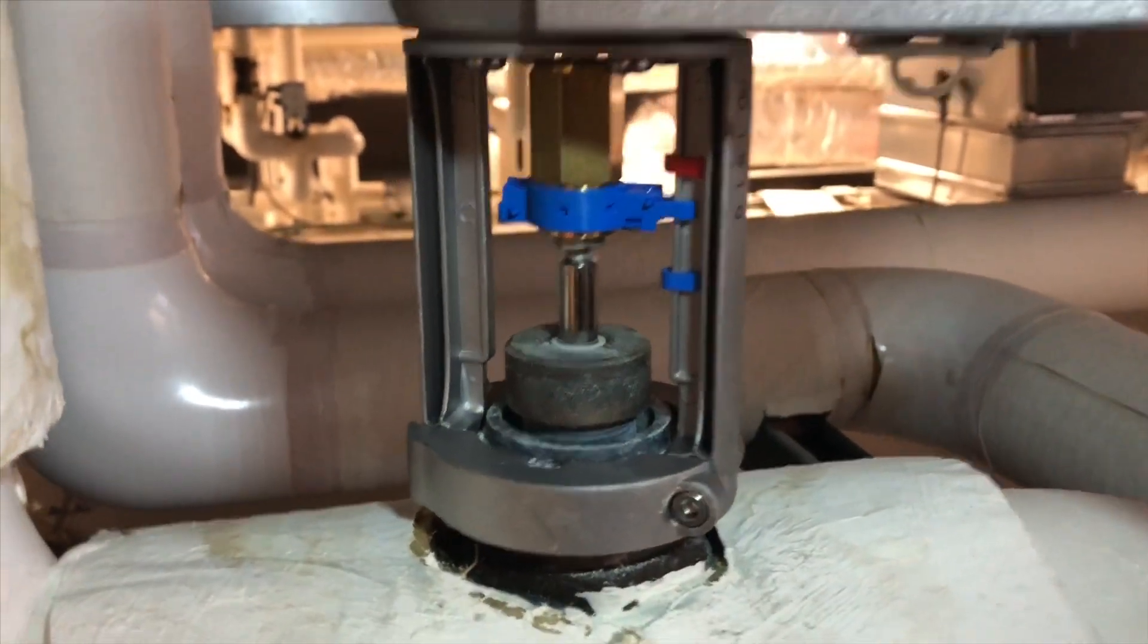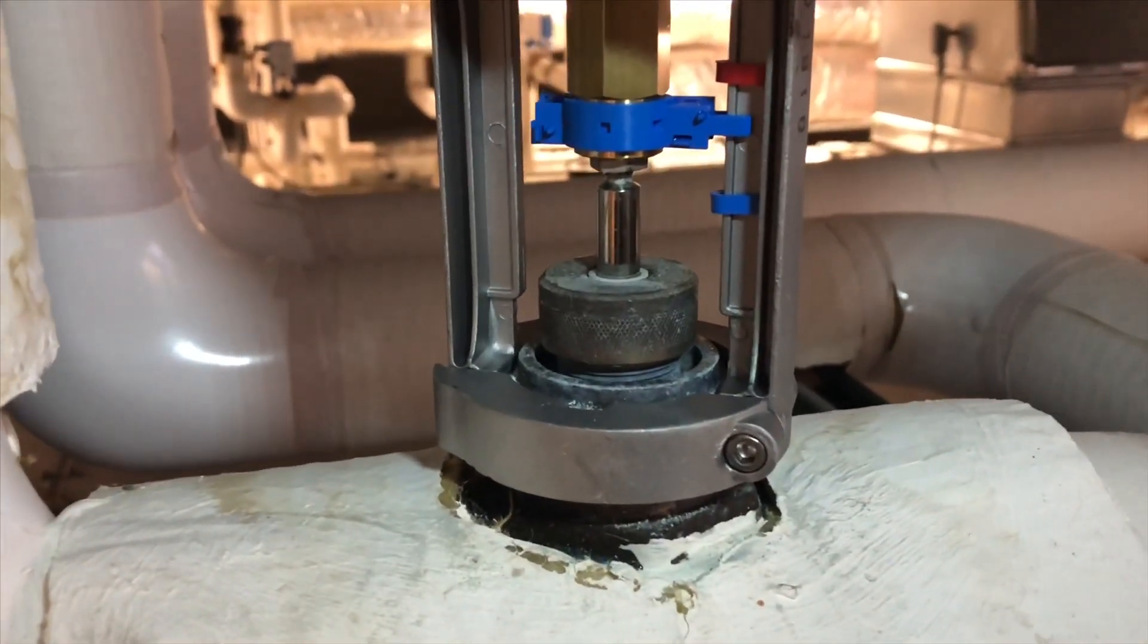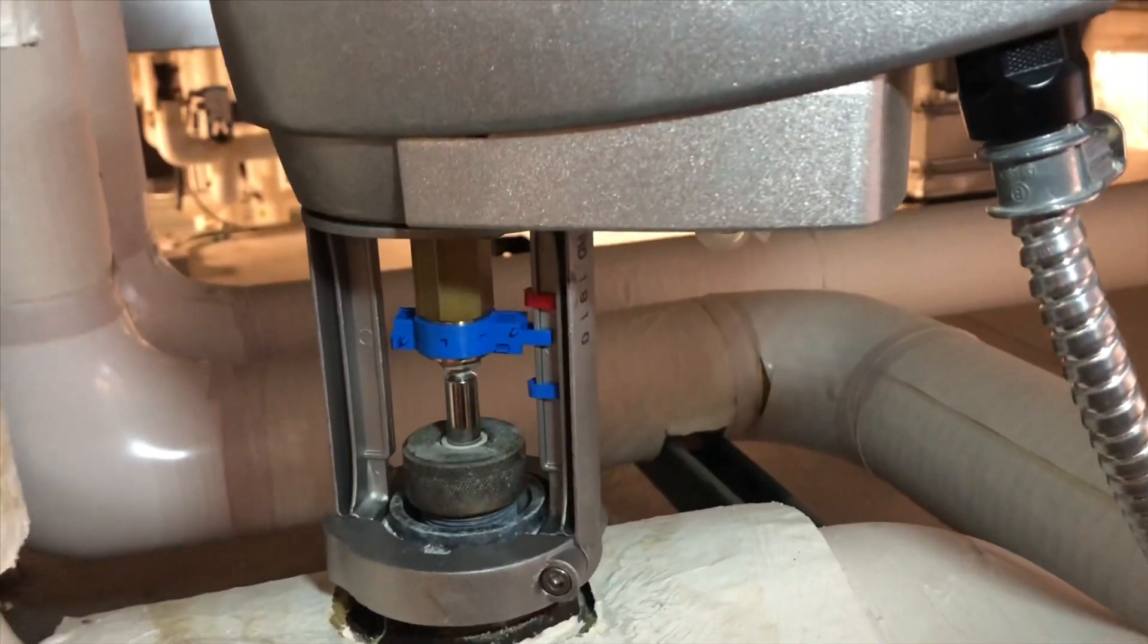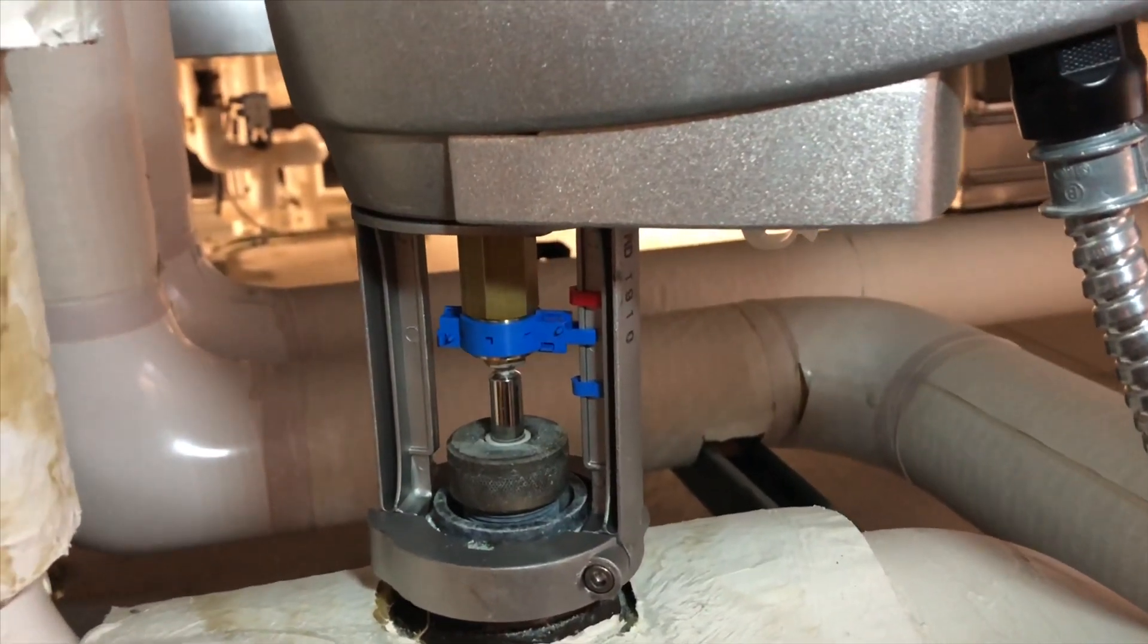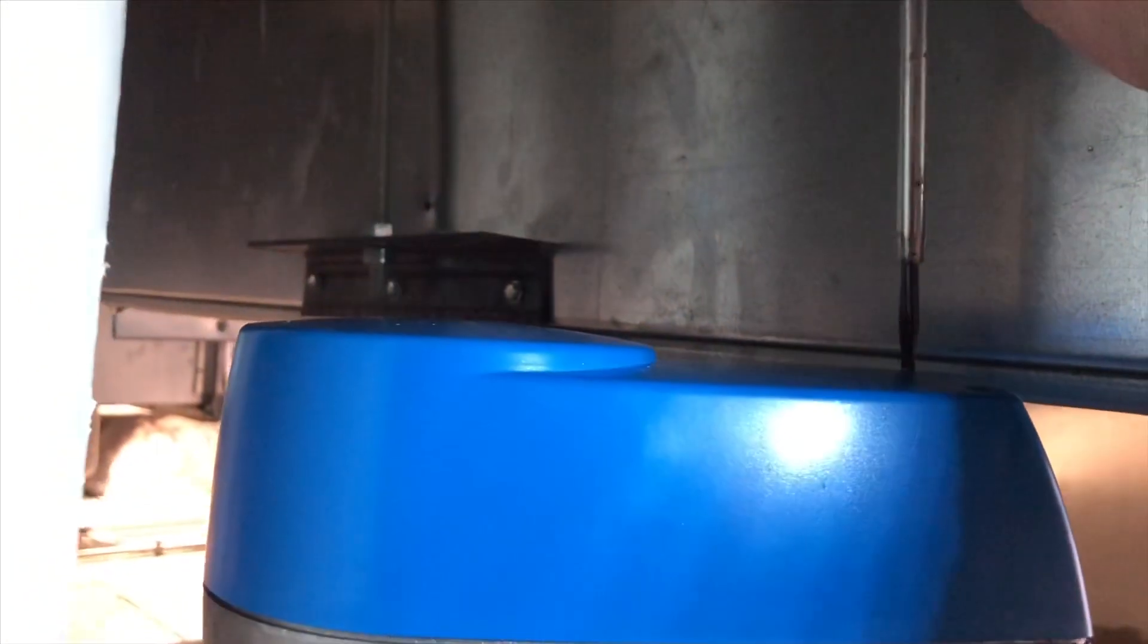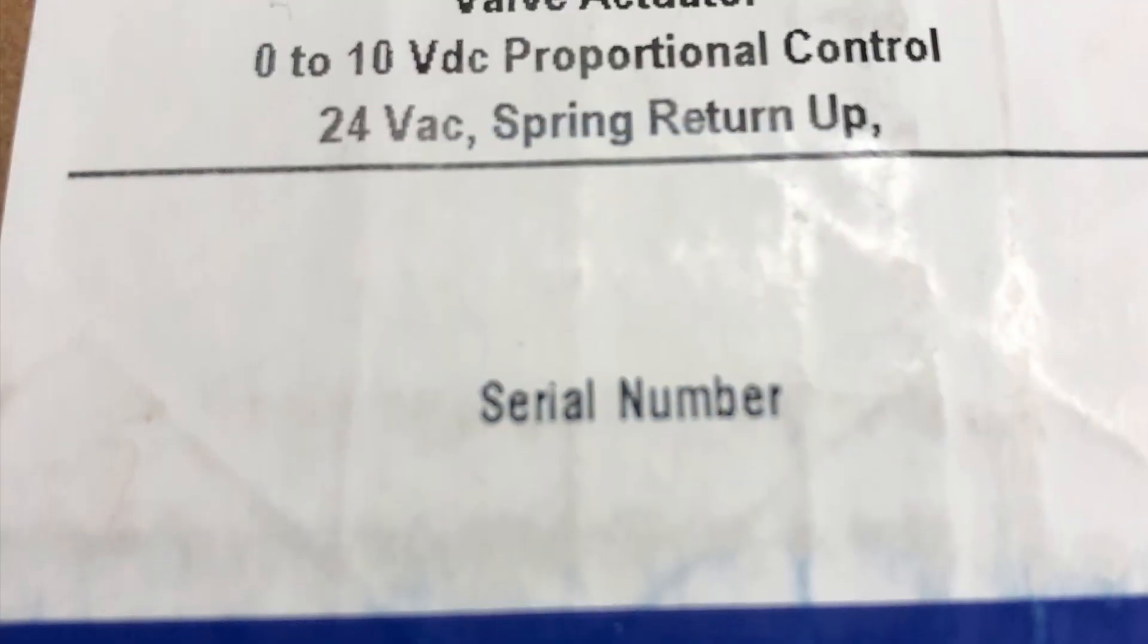Now that we've reversed, our cooling valve is now going to the open position, which is down. Which is proper function for this application. Now we're going to put our cover back on and tighten the screws back up.